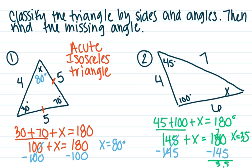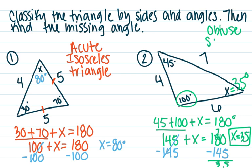So x is 35 degrees. Looking at this, I see I do have one angle bigger than 90 degrees, so I have an obtuse triangle by angles. Then looking at my sides — four, six, seven — they're all different. That's a scalene triangle. So I have an obtuse scalene triangle: obtuse because of that big angle, and scalene because all the sides are different.